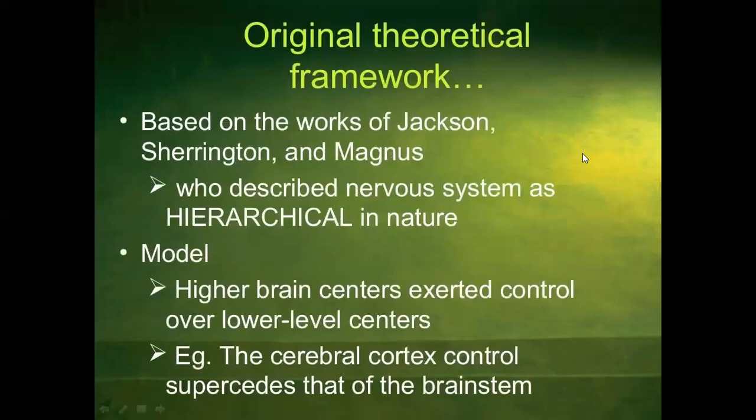The original theoretical framework was based on the work of Jackson, Sherrington, and Magnus, who described the nervous system as hierarchical in nature. The model is given by higher brain centers exerting control over lower level centers — for example, the cerebral cortex controls and supersedes that of the brainstem.